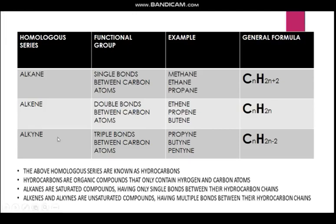Then we have alkyne, which is characterized by a triple bond between the carbon atoms. Once you see the triple bond between carbon atoms, you know it's alkyne. The examples are propyne, butyne, and pentyne. You can also see the suffix becomes the suffix of the chemical names. The general formula is CnH2n-2. Pay attention to the general formula - it helps you identify which homologous series a particular compound belongs to.